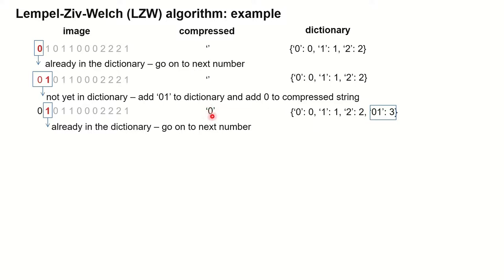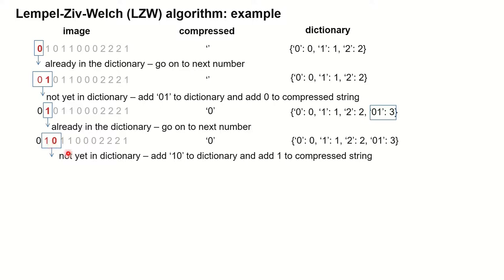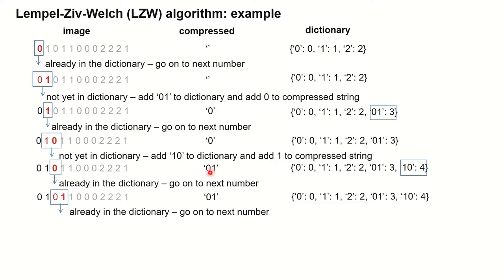In the next step the compressed string will look like this, with a new entry in our dictionary. We go on with the next number that we haven't encoded yet. It's a single number, so that's of course in the dictionary, and we look for the next longer sequence: one and zero in a row. That's not yet in our dictionary, so we add it. The last sequence that was still in the dictionary, the code representing it, gets added to the compressed string. The compressed string now has one more entry and the dictionary also has a new entry.